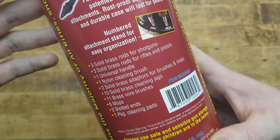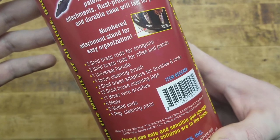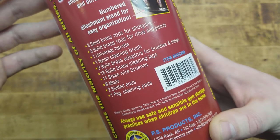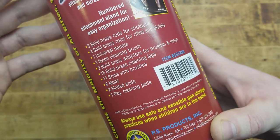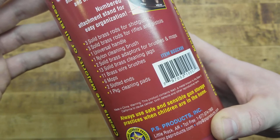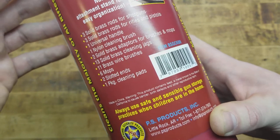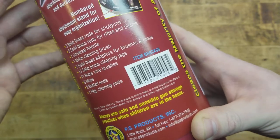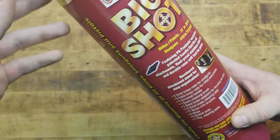But three solid brass rods for shotguns. Three for rifles or pistols. One universal handle. Nylon cleaning brush. Brass adapters. Brass cleaning jags. Brass wire brushes. Six mops. Two slotted ends. And one package of cleaning pads.